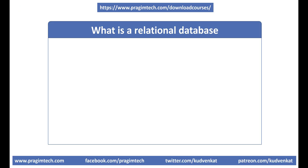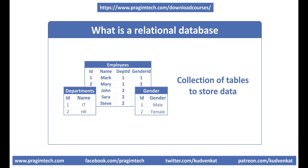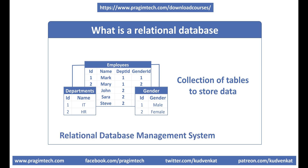What is a relational database and why do we use it? In simple terms, a relational database is a collection of tables to store data. The tables are usually related to each other by primary and foreign key constraints, hence the term relational database management system, or RDBMS for short.